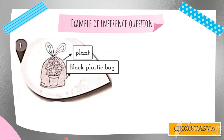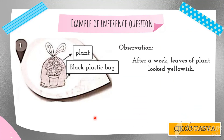Another example: the observation is that after a week, the leaves of a plant look yellowish. You can see the plant is inside a black plastic bag. Since it's a black plastic bag, sunlight cannot enter, so the plant is not receiving sufficient sunlight. The inference is that the plant did not receive enough sunlight. Always relate your inference answers to your experiment and observation, and always ask why.